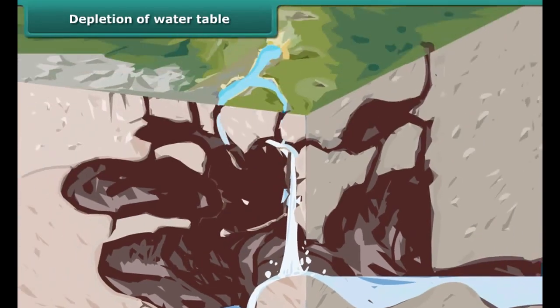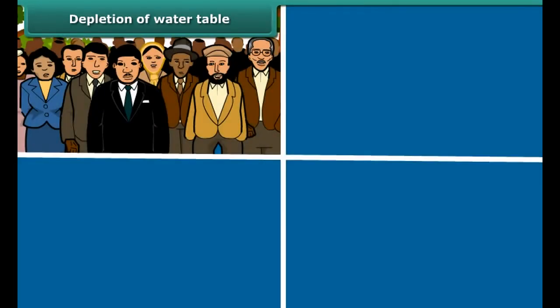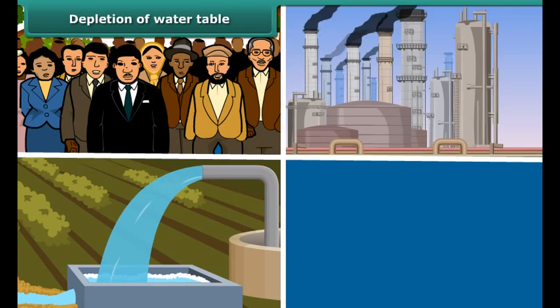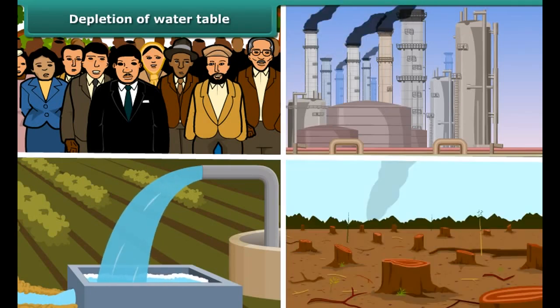However, the water table may go down if water is not sufficiently replenished. This may happen due to many factors such as increasing population, rapid growth of industries, agricultural activities, scanty rainfall, and deforestation.